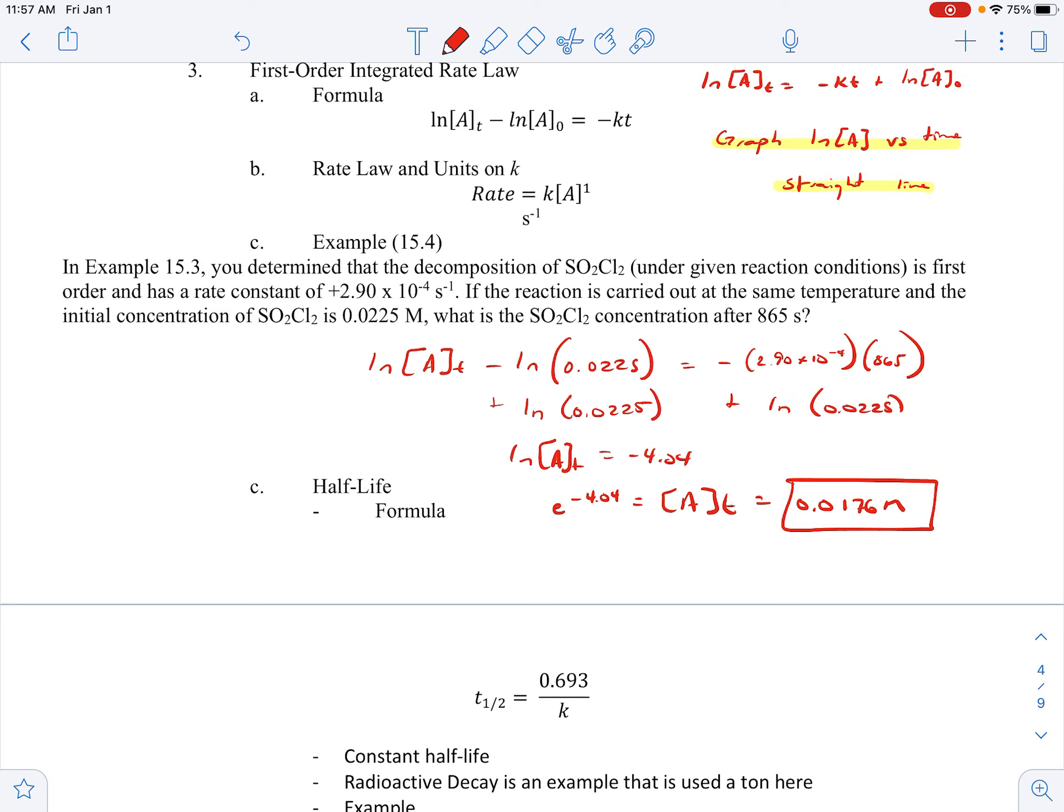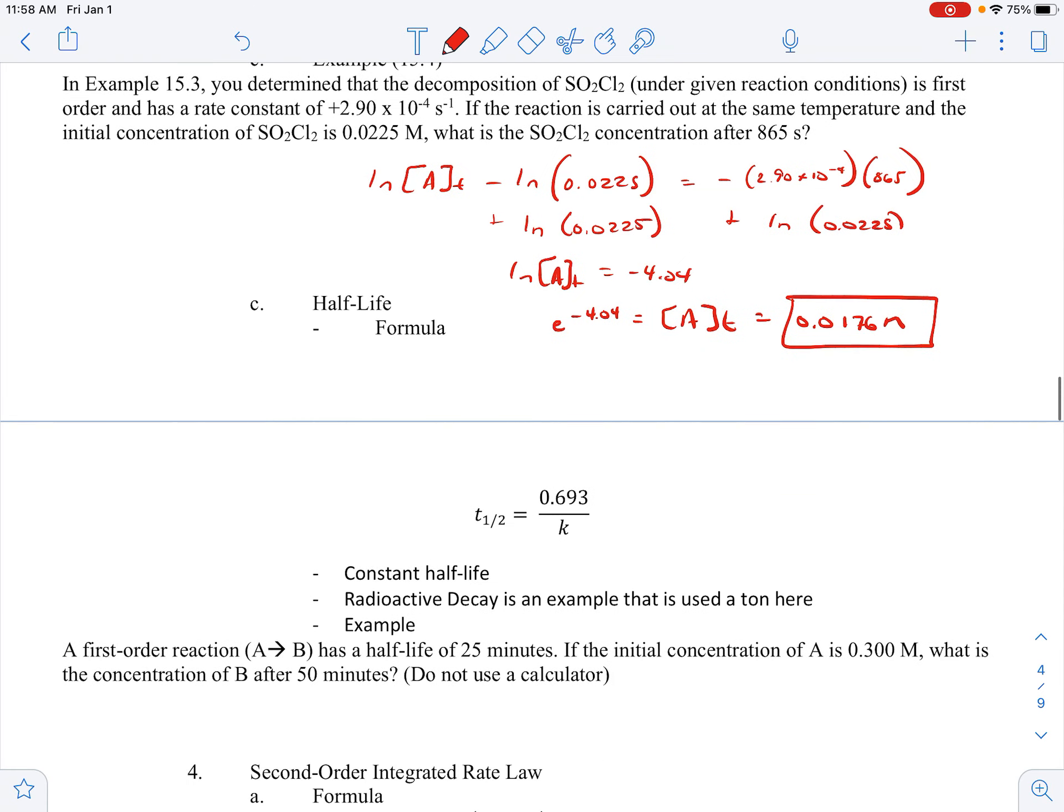This half-life formula is actually really important because radioactive decay is something we use. So another formula. Note our half-life is also constant. That's the other thing that makes this useful. So t_1/2 equals 0.693 over k. K is our rate constant and we can solve that.